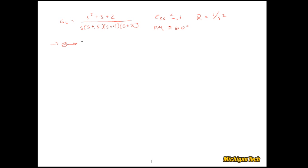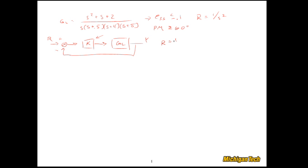Let's review where all this fits into a closed loop system. Here's our gain K that we get to fiddle with — that is really the design process: picking that value of K. We have our loop transfer function and unity feedback, a reference input, and an output Y. For a unit ramp input r = 1/s², the steady state error equals 1/Kv, where Kv is the velocity error constant equal to the limit as s goes to 0 of s·K·GL, everything in the forward path. That equals K/5.